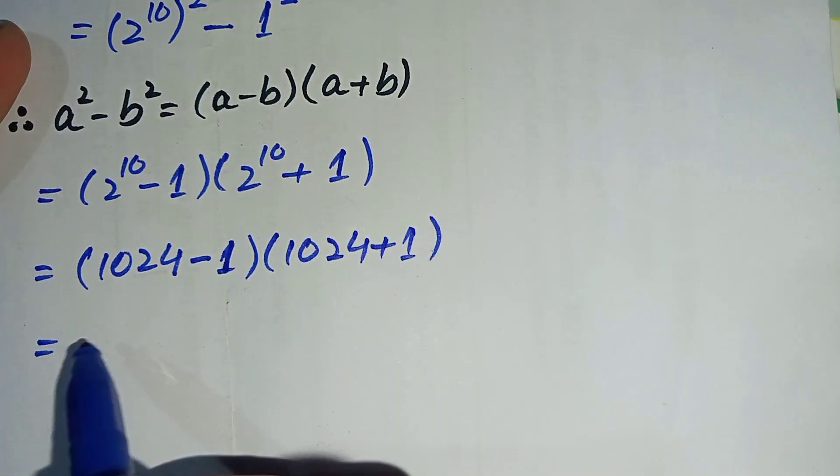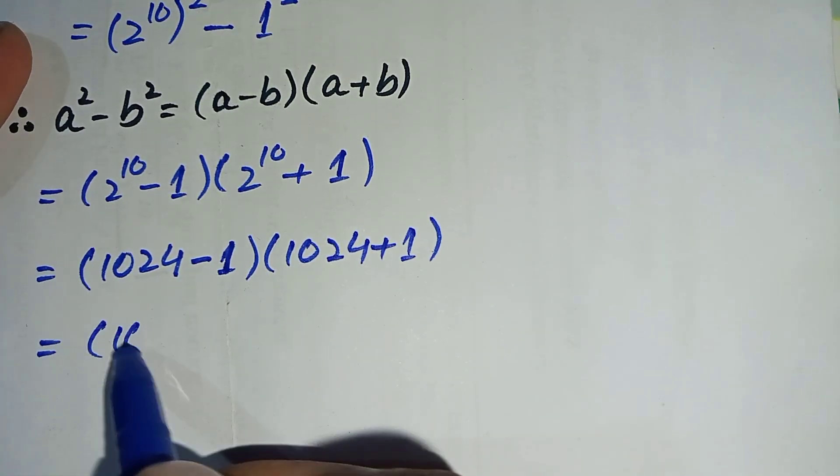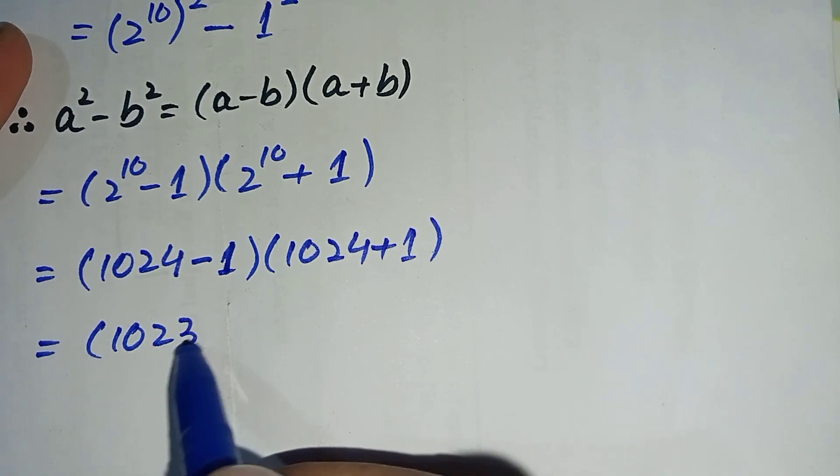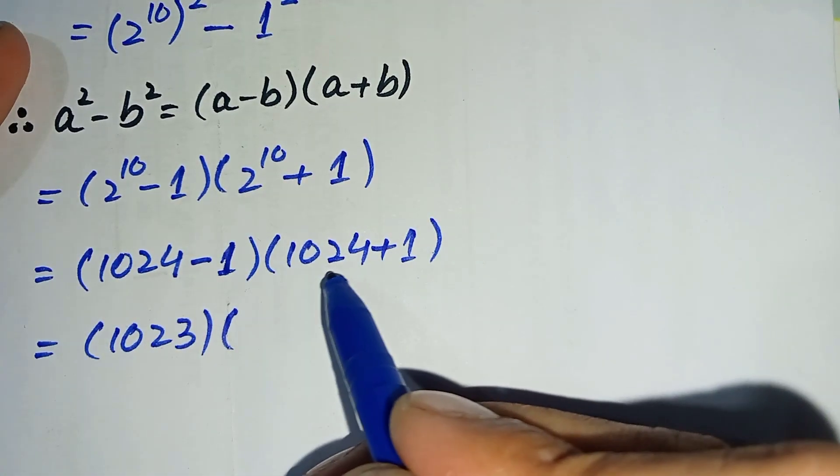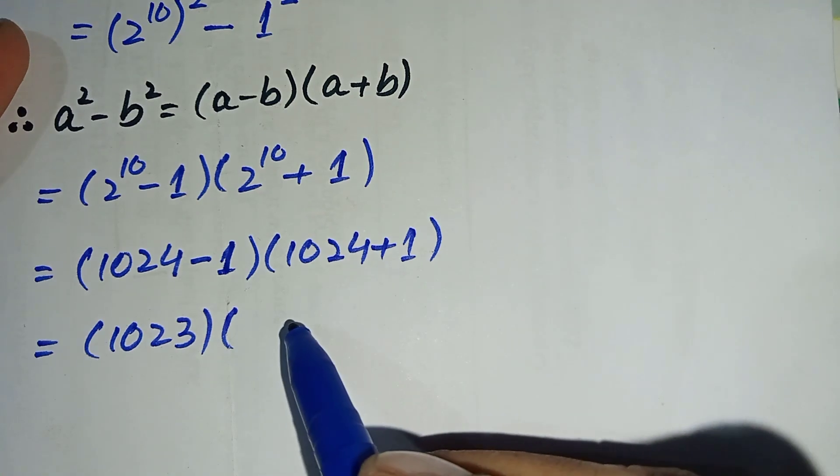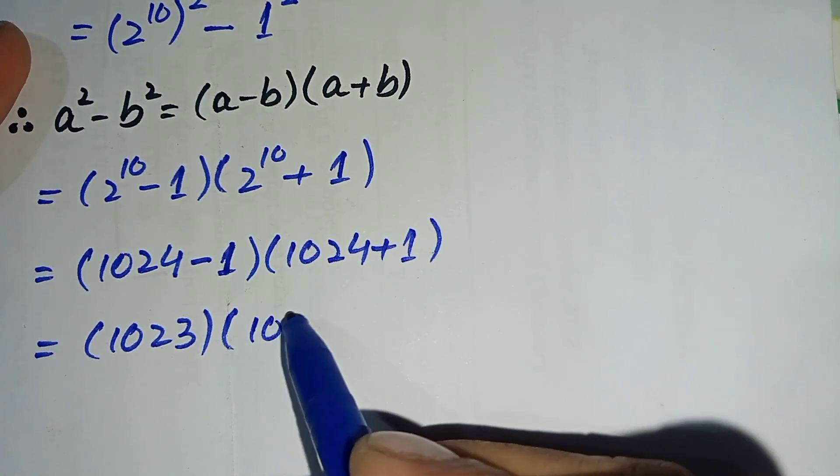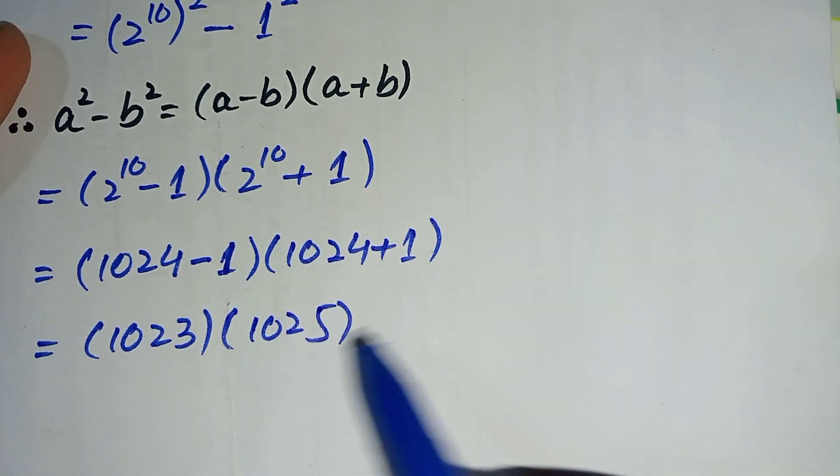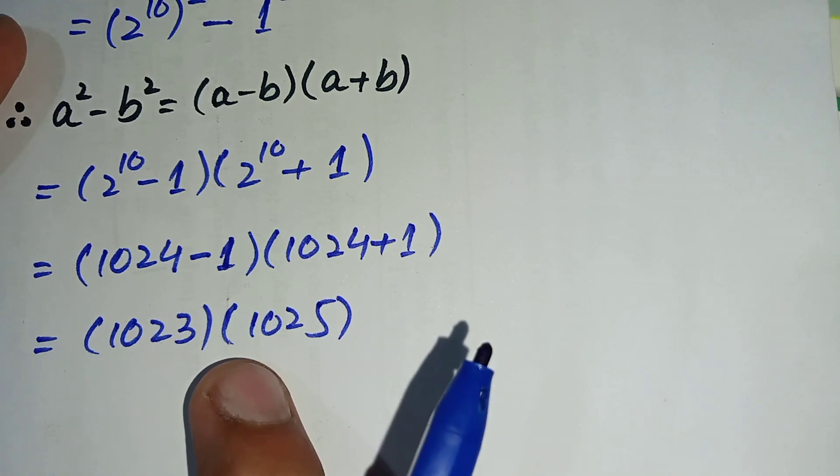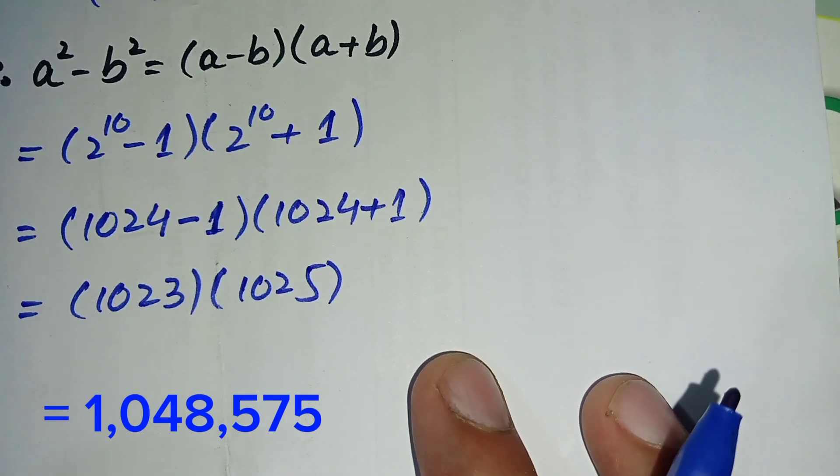1024 minus 1 gives us 1023, and 1024 plus 1 gives us 1025. So we will multiply these two numbers by simple multiplication.